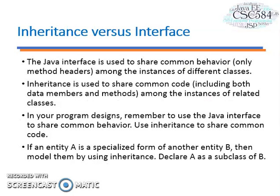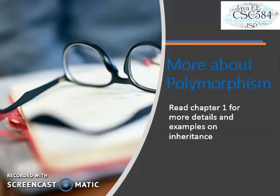We have now looked at an example of polymorphism with an interface. To summarize: the Java interface is used to share common behaviour among instances of different classes, whereas inheritance is used to share common code among instances of related classes. In your program design, use the Java interface to share common behaviour, and use inheritance to share common code. If entity A is a specialized form of entity B, model them using inheritance and declare A as a subclass of B. Please read chapter 1 in your course platform. Thank you.